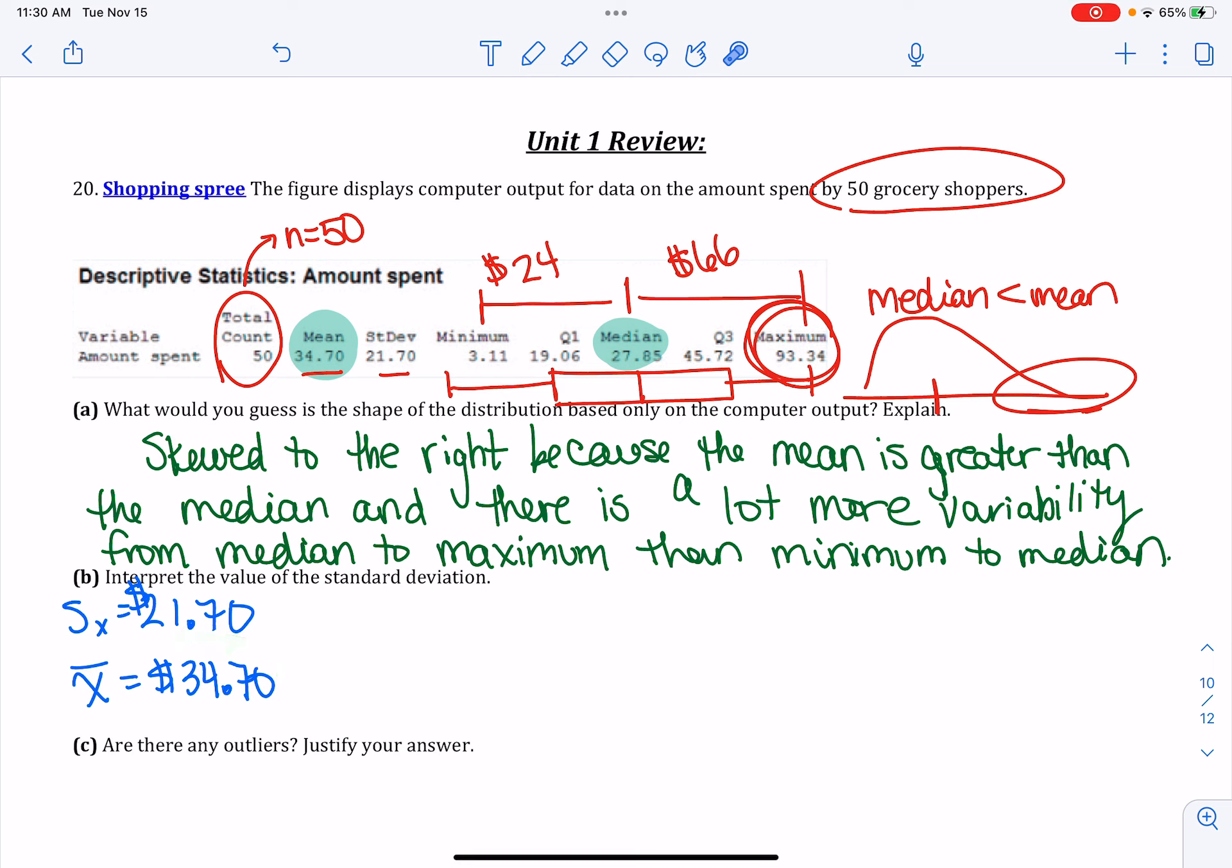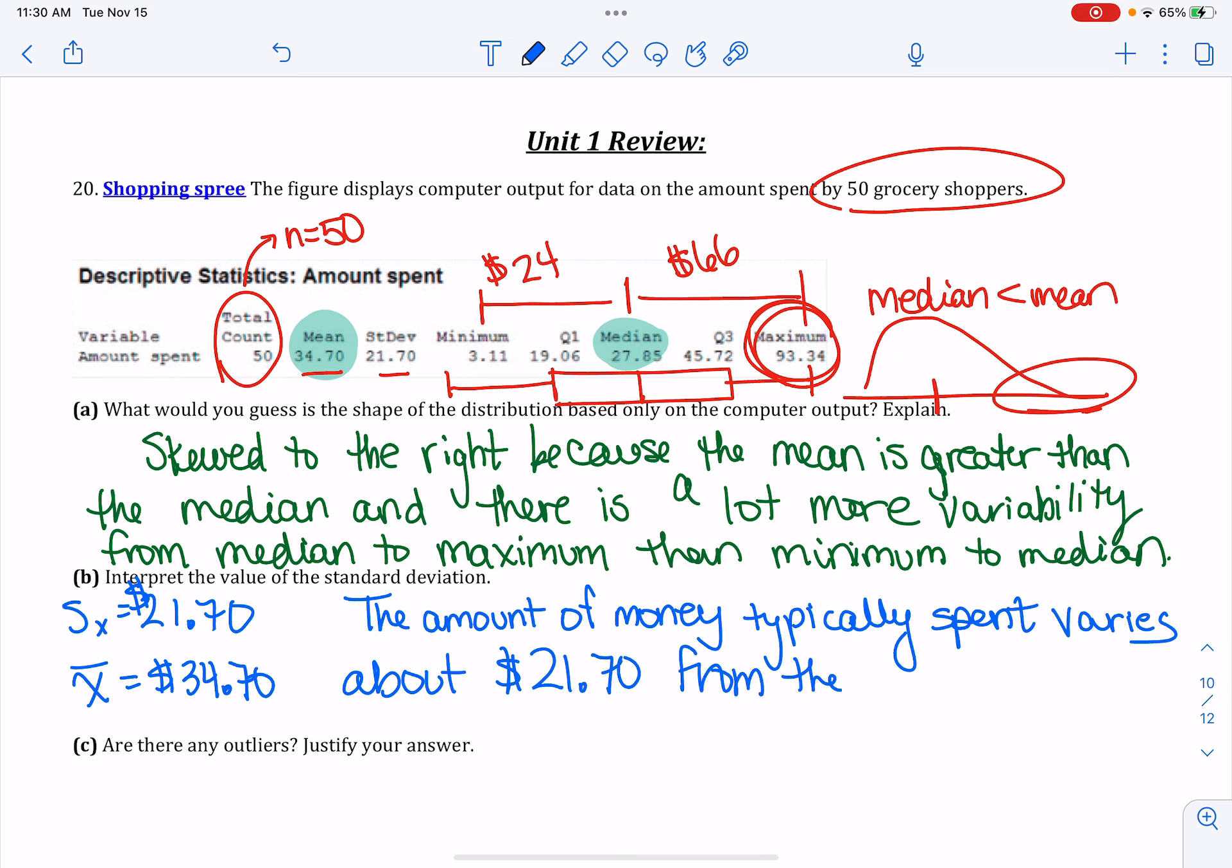They must be getting like two things and a typical difference of $21.7. So the amount of money typically spent varies about $21.70 from the mean of $34.70.